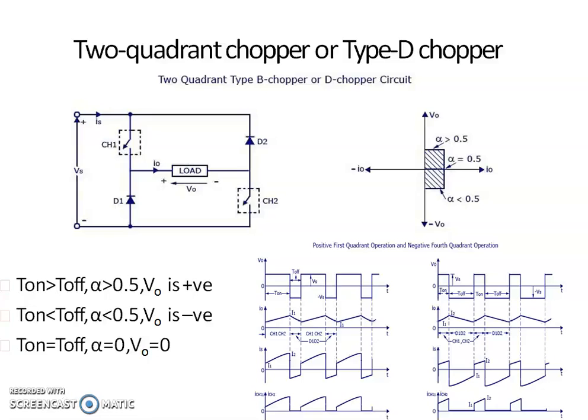In summary: Class A chopper is the first quadrant chopper, Class B chopper is the second quadrant chopper, Class C chopper provides first and second quadrant operation, and Class D chopper provides first and fourth quadrant operation.